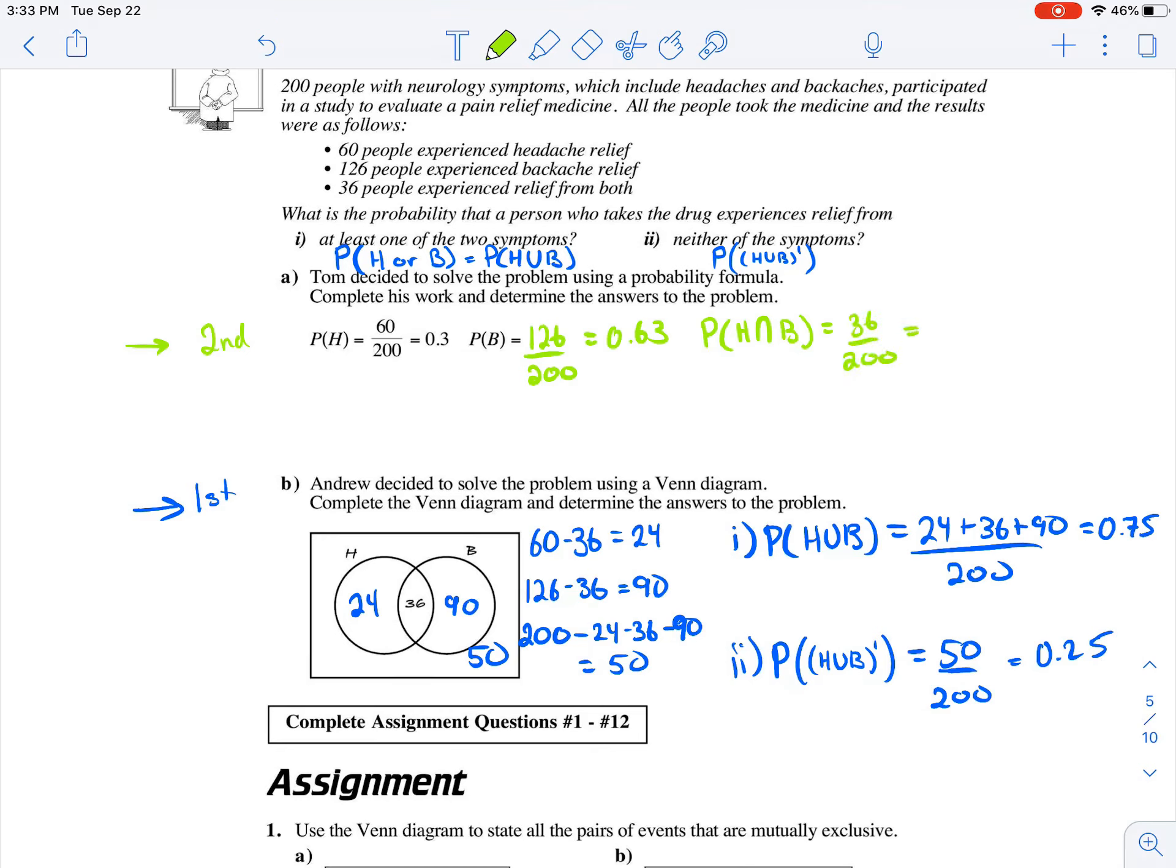Both would be the intersection, which is 36 all over 200, which gives us 0.18. Now let's solve. The probability of experiencing headache or backache relief, so the keyword was or, so we're going to add, keeping in mind that these are not mutually exclusive because there's the area of overlap. So we have to subtract that out so we don't count things twice, which is similar to what we're doing here.